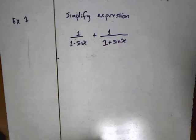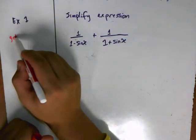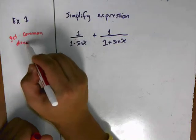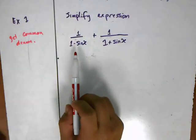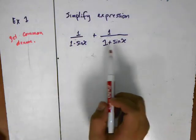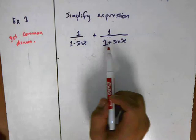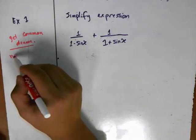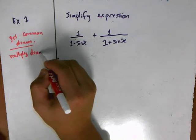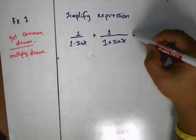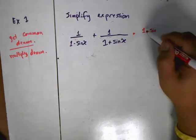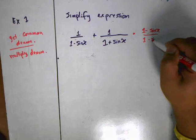One of the things that I'm going to do here is get a common denominator. In this case there's really nothing common between 1 minus sine x and 1 plus sine x, so I'm just going to multiply the two of them. To get this done, I'm going to multiply the left side by 1 minus sine x over 1 minus sine x.